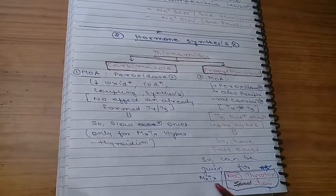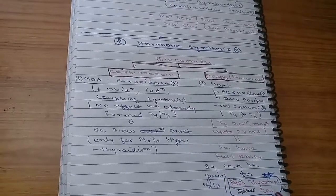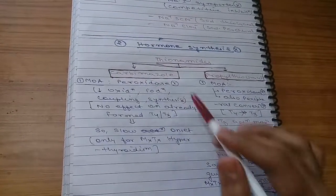Propylthiouracil has fast onset of action, so it can be given for maintenance treatment. Very important, propylthiouracil is the drug of choice for thyrotoxicosis.